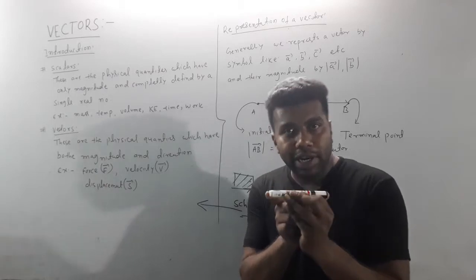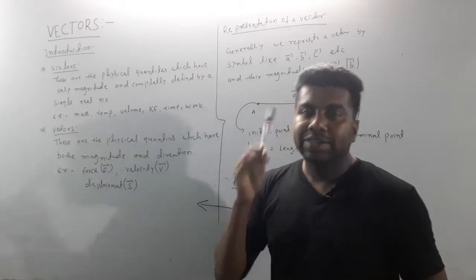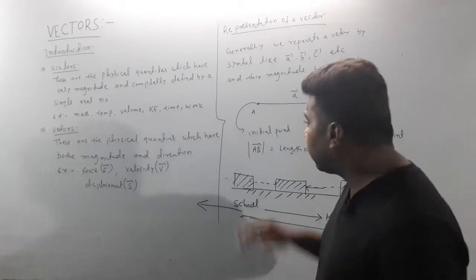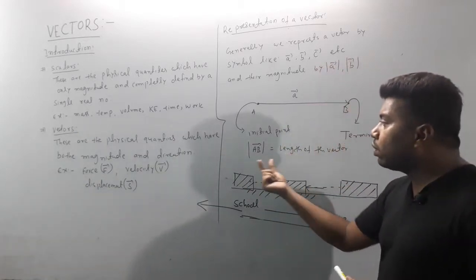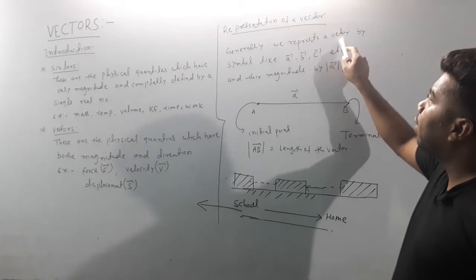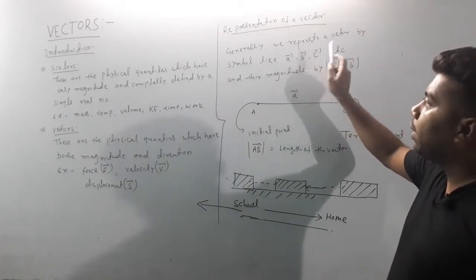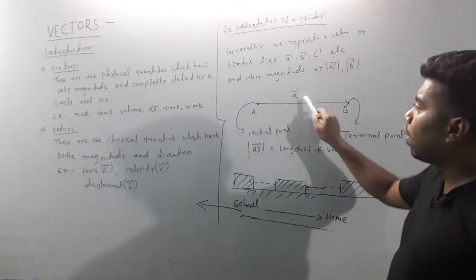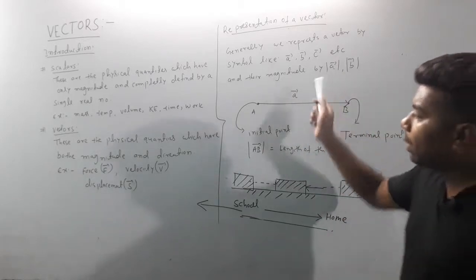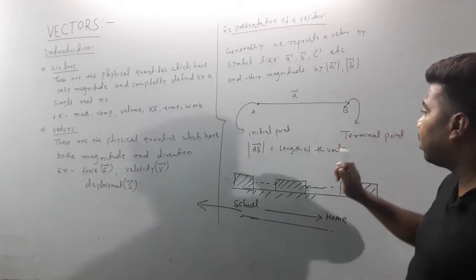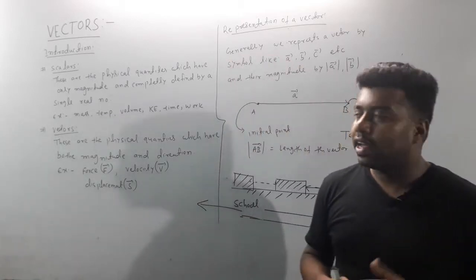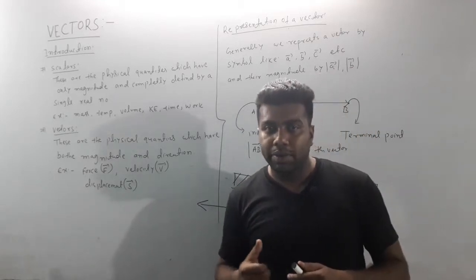The length of a vector is its magnitude. We generally represent a vector by a symbol — vector AB, or magnitude of vector A, or mod of A. The vector represents both magnitude and direction.